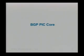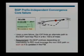The BGP prefix independent convergence feature, which we call BGP-PIC, has two flavors: the core flavor and the edge flavor. Let us first define the core flavor.